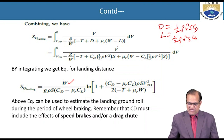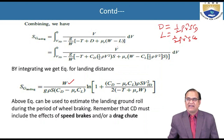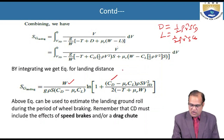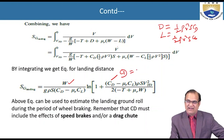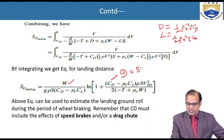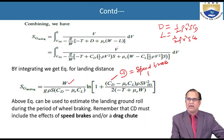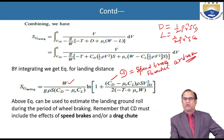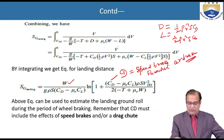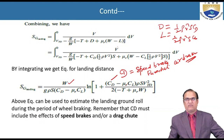This equation is used to estimate the landing ground run during the braking period. Remember that CD must include the effect of speed brakes and/or a drag chute — so all contributions from speed brakes, parachute, and air brakes must be included in CD.